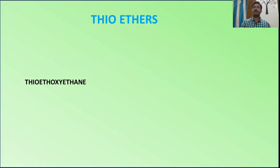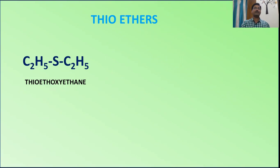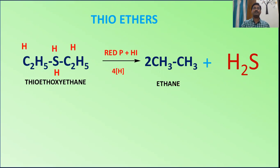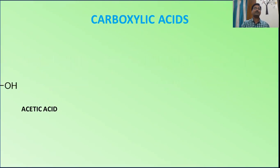For thioethers — as I mentioned, when oxygen is replaced by sulfur we use the 'thio' term, so it is called thioethoxyethane. When treated with our reagent, it converts into ethane. The sulfur takes two hydrogens and the two ethyl groups take two hydrogens, so four hydrogens are required in total.